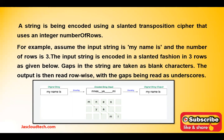One of the questions was about a slanted transposition cipher that uses an integer number of rows. For example, given the input string 'my name is' and three rows, the string is encoded in a slanted fashion across three rows. Gaps in the string are treated as blank characters, and the output is read row-wise with gaps represented as underscores. You can see the diagram on screen.